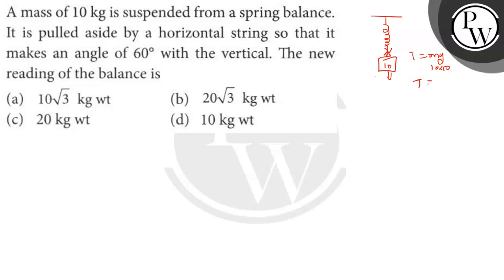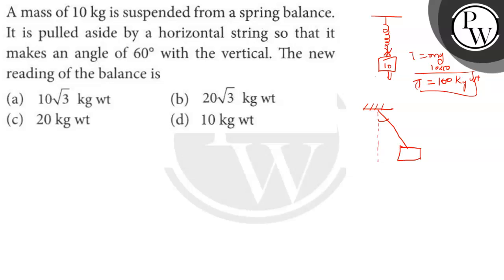So 10 into 10 — in starting, T is equal to 100 Newton (10 kg weight). Now what the question is saying: it is pulled aside by the horizontal string so that it makes an angle of 60 degrees with the vertical. Now we have a horizontal string with force F acting on it.